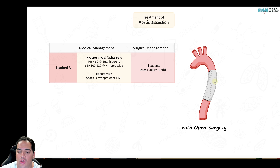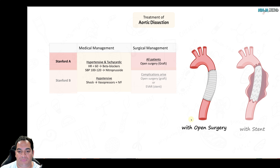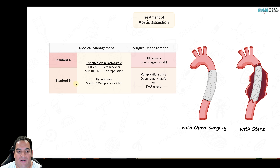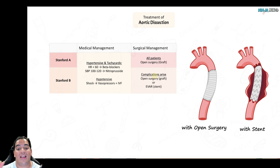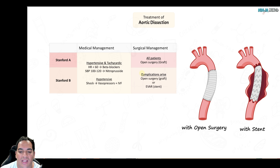Surgery for Stanford A typically involves grafting — cut out the diseased segment and replace it with a graft. For Stanford B, you medically temporize by treating hypertension and tachycardia. If scary complications develop — acute kidney injury, mesenteric ischemia, acute limb ischemia, or rupture causing hemodynamic compromise — then take them to surgery for a graft or a stent, also known as EVAR (endovascular aortic repair). Surgery for Stanford B is only indicated when complications arise.